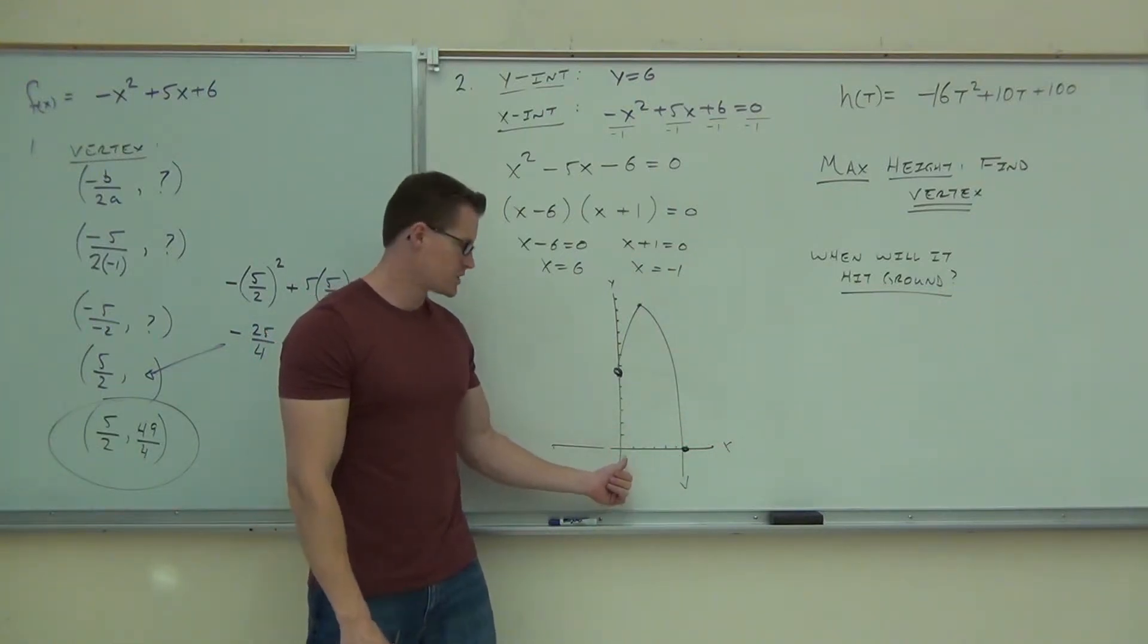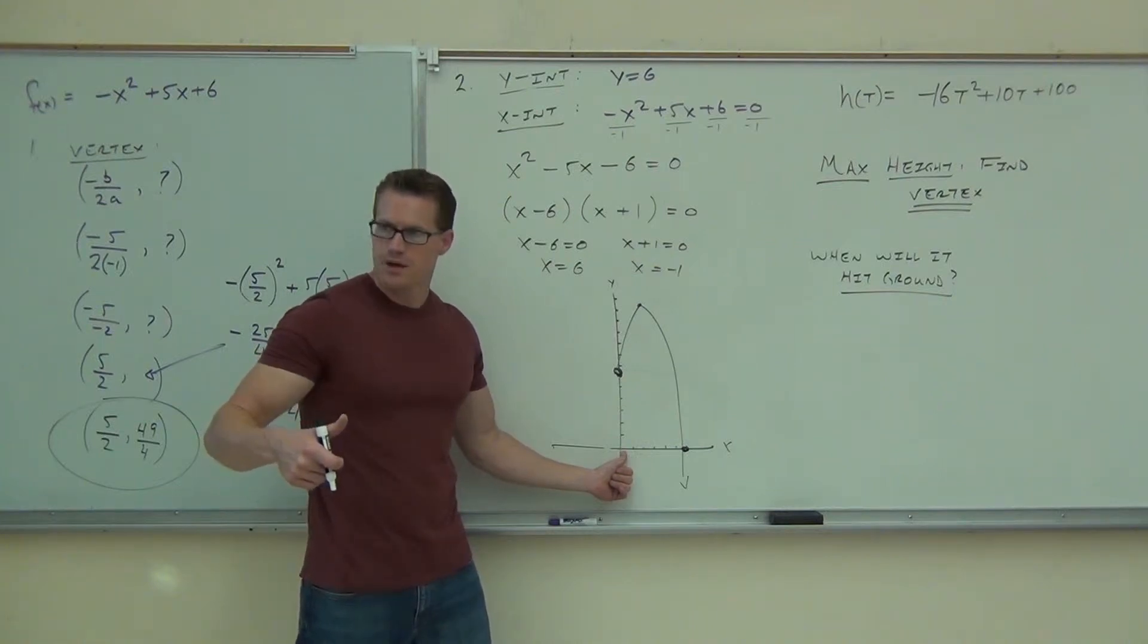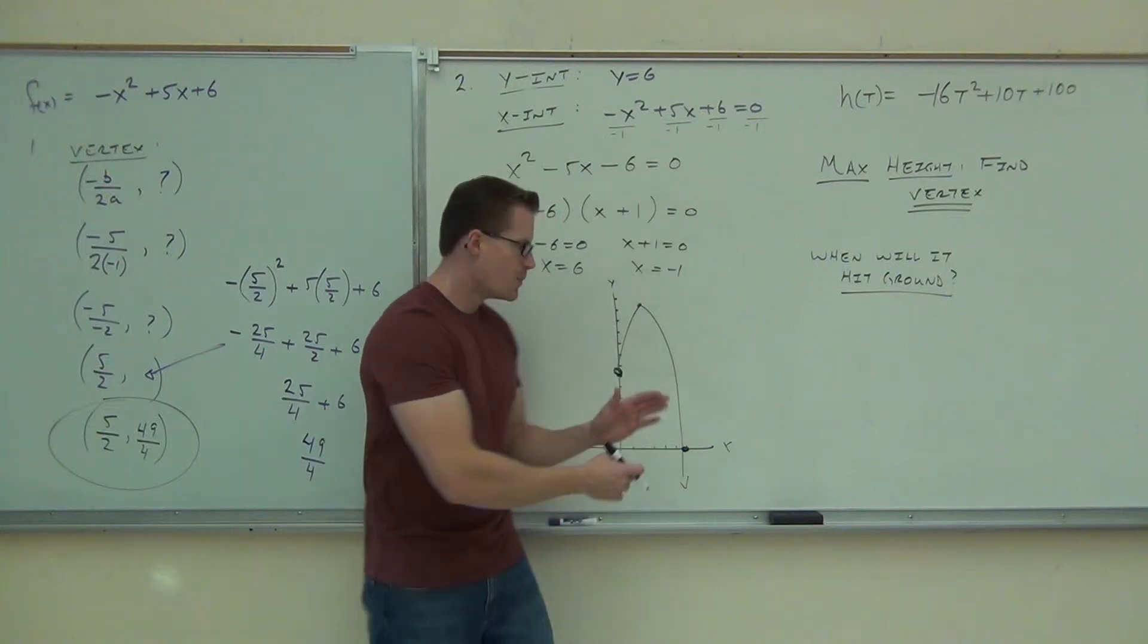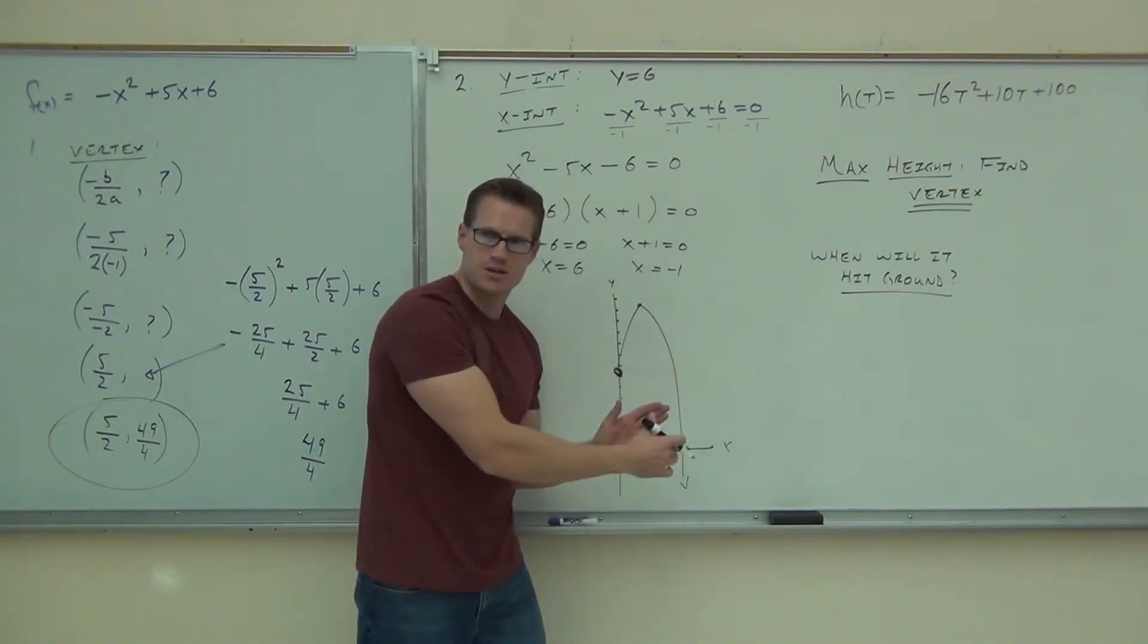One variable could be zero, in which case it would be starting on the ground level. If it's not, if it's negative, of course you're not going to take that, because you can't go backwards in time, but you can go forward. So, you're going to look for your positive X intercept.